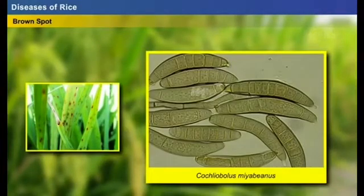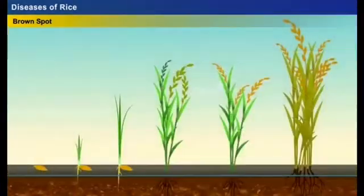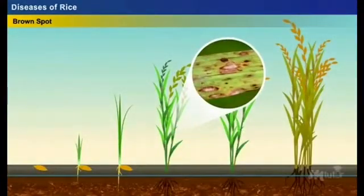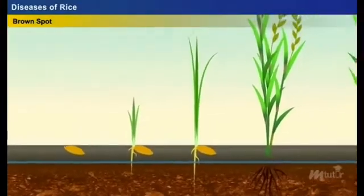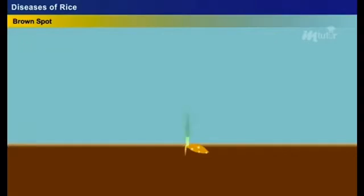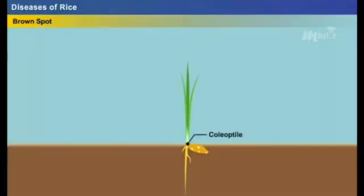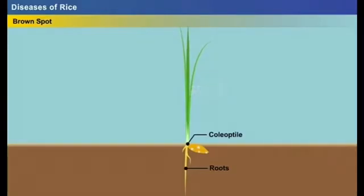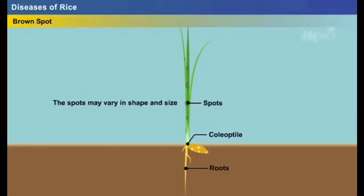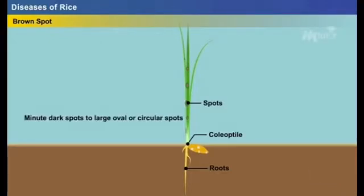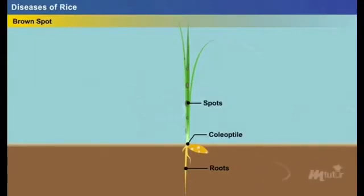Brown spot is caused by the fungus Cochliobolus miyabeanus, formerly known as Helminthosporium oryzae. The fungus affects the plant at all stages of growth, from seedling to the final stage. When a diseased seed is sown, the spores enter the coleoptile and roots. As the plant grows, the spores develop on the leaf forming spots that may vary in shape and size, from minute dark spots to large oval or circular spots. These spores spread to other leaves and panicles through the wind.